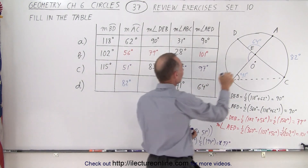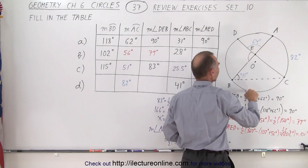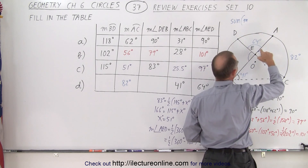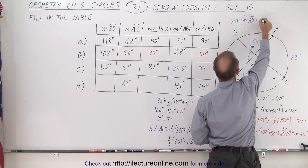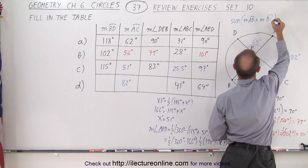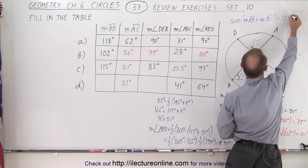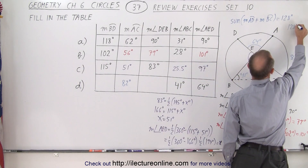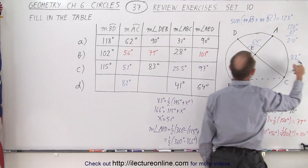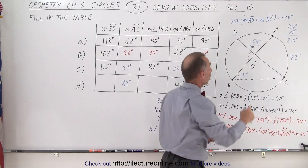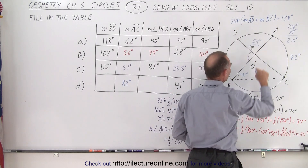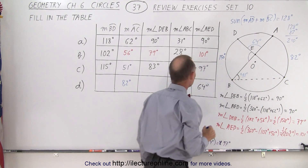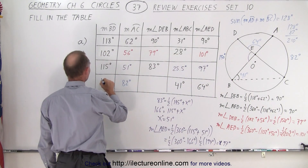Since they give us angle A-E-D as 64 degrees, we know the sum of the two corresponding arcs — arc A to D plus arc B to C — is double that, which is 128 degrees. Adding 128 degrees plus 82 degrees gives us 210 degrees. Subtracting from 360 gives us 150 degrees for the measure from B to D.